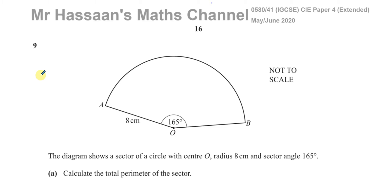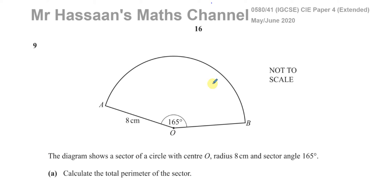The diagram shows a sector of a circle with center O and radius 8 centimeters, and sector angle 165 degrees. Calculate the total perimeter of the sector. A sector of a circle is like a slice of a pizza — it's not the whole circle, but a portion of the whole circle.